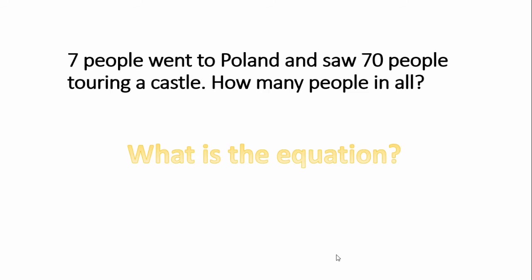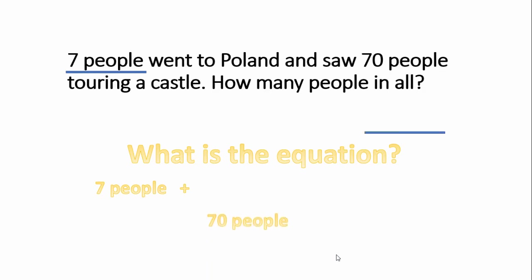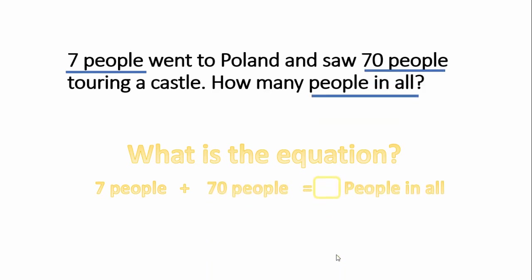We know there are seven people and we know there are 70 people, and that gives us a total of how many people. Let's take a look at our equation: seven plus 70 equals blank. What do you think should go in that blank? You said 77. You're correct.